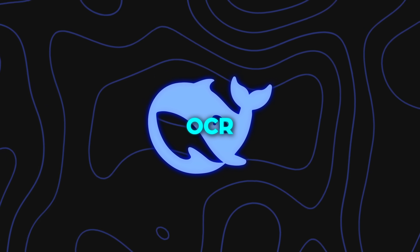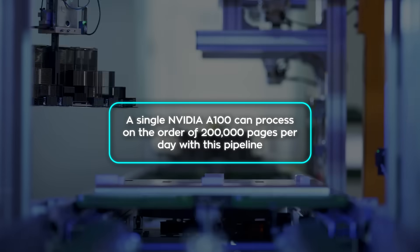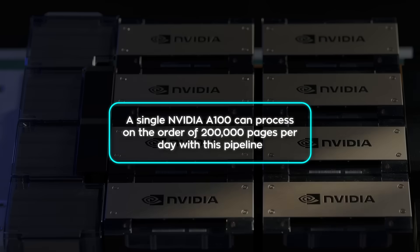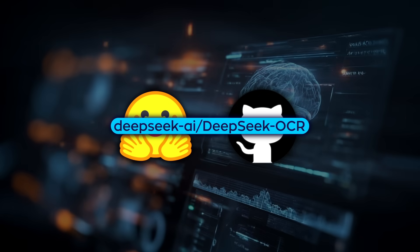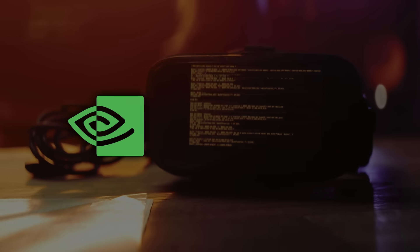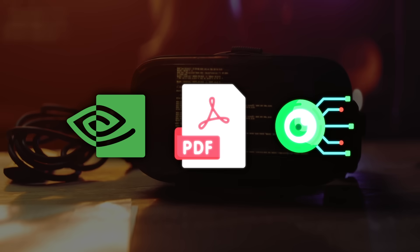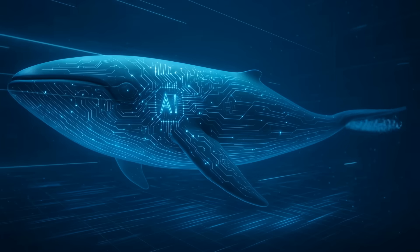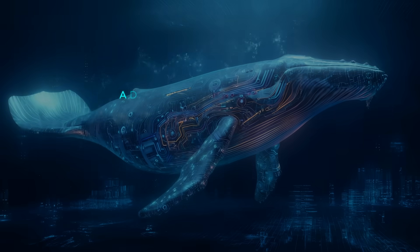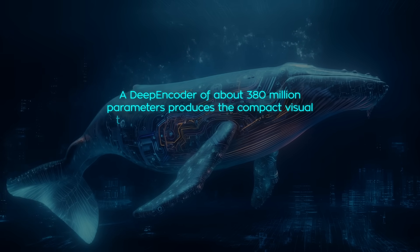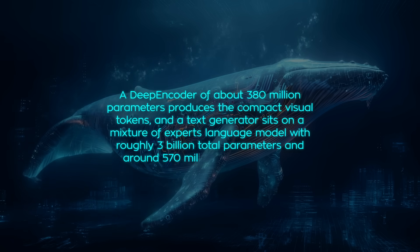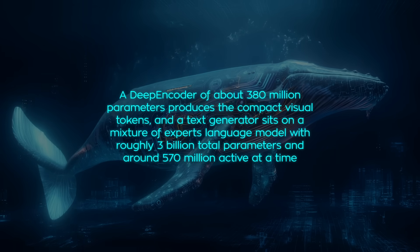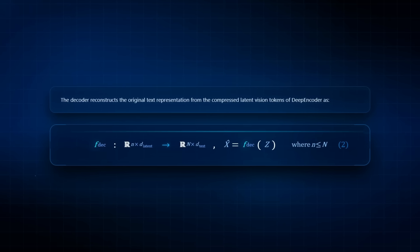Throughput matters, and DeepSeek put a flag in the ground. A single NVIDIA A100 can process on the order of 200,000 pages per day with this pipeline — the kind of rate data teams actually care about when building pre-training sets, RAG corpora, or compliance archives. The project ships on Hugging Face and GitHub under DeepSeek-AI/DeepSeek-OCR with runnable code for NVIDIA GPUs, PDF helpers, and acceleration tips via vLLM. The overall model capacity clocks around 3 billion parameters, split between a deep encoder of about 380 million parameters producing compact visual tokens, and a text generator on a mixture-of-experts language model with roughly 3 billion total parameters and around 570 million active at a time. Sparse activation keeps the compute bill lean.